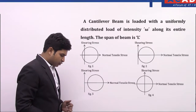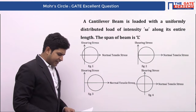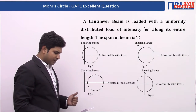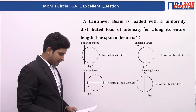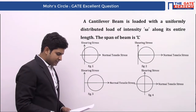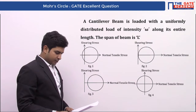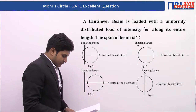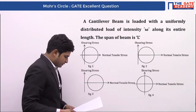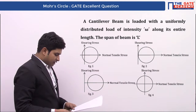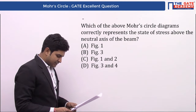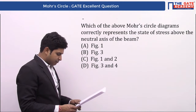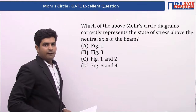Hello friends, today we are going to solve a very good question from Mohr's Circle. The question is: a cantilever beam is loaded with a uniformly distributed load of intensity W along its entire length. The span of the beam is L. There are four figures — which Mohr's Circle diagram correctly represents the state of stress above the neutral axis of the beam?